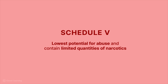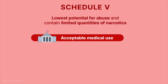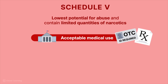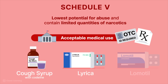Schedule V drugs have the lowest potential for abuse, with accepted medical uses such as treatment for a severe cough, and contain limited quantities of certain narcotics. These drugs may require a prescription or may be over-the-counter. OTC narcotics are sold only by registered pharmacists, and the buyer must be 18 years old and show ID. Examples include cough syrups with codeine, Lyrica, and Lomotil.